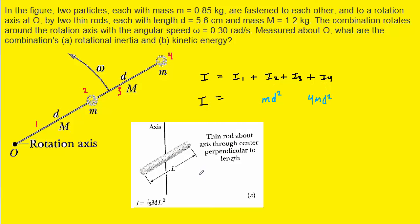We can next turn to the rotational inertia of the thin rod. In your textbook, there should be a table of equations giving the rotational inertia for various objects rotating about a rotation axis. For the thin rod, the equation is 1/12 times the mass of the rod times its length squared. The only problem is that this assumes the axis passes directly through the center of the rod.